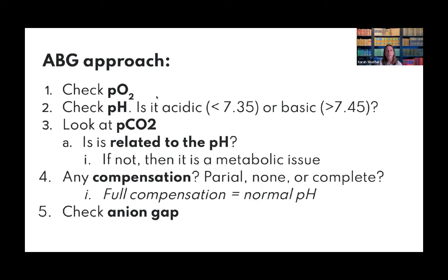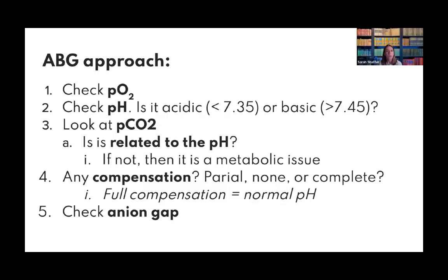Now we'll talk about how to approach an ABG — how to do it fast, efficiently, and simply. First, look at the O2 to make sure they're not severely hypoxemic. Also confirm it's an arterial blood gas, not venous. Then look at the pH — is it abnormal? Is it acidic or basic?